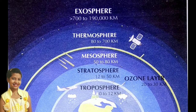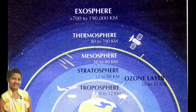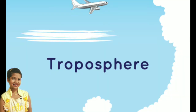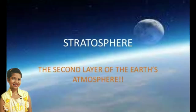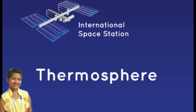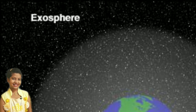Layers of Atmosphere. Atmosphere is the blanket of air that surrounds the Earth. There are five layers of atmosphere. They are troposphere, stratosphere, mesosphere, thermosphere and exosphere.